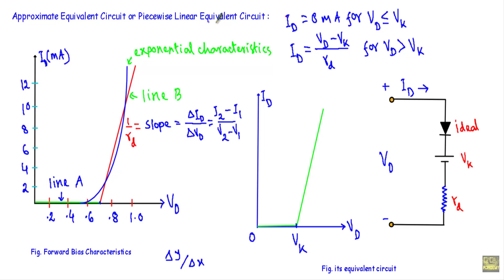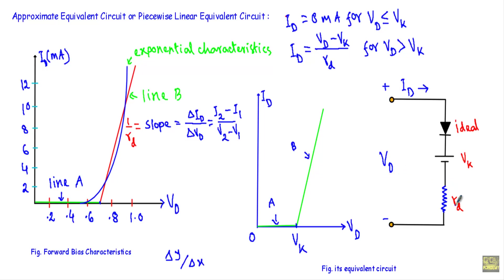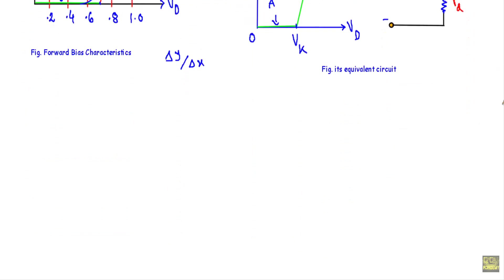Now let me show you the piecewise linear equivalent circuit or approximate equivalent circuit. We have approximated the exponential IV curve with two line segments: line A, represented by ID = 0 mA for VD ≤ VK, and line B, represented by ID = (VD − VK) / RD, where RD is the dynamic or forward resistance of the diode. This piecewise linear model can be represented by an equivalent circuit which includes an ideal diode, a voltage source VK opposing the applied forward voltage VD, and the diode forward resistance RD.